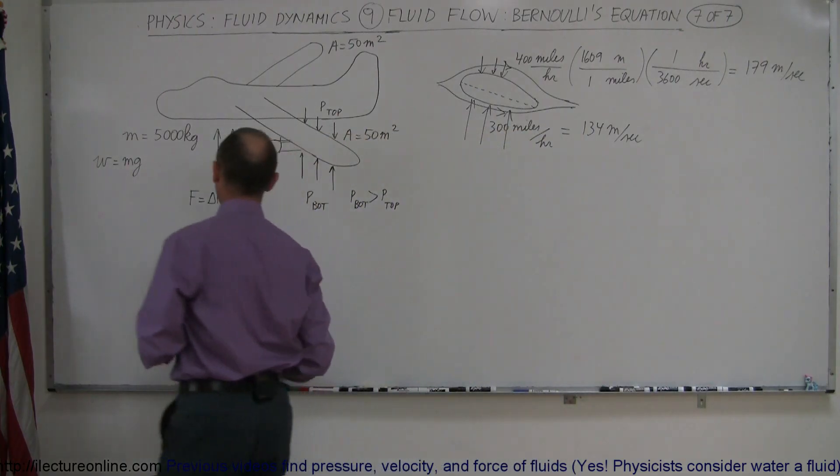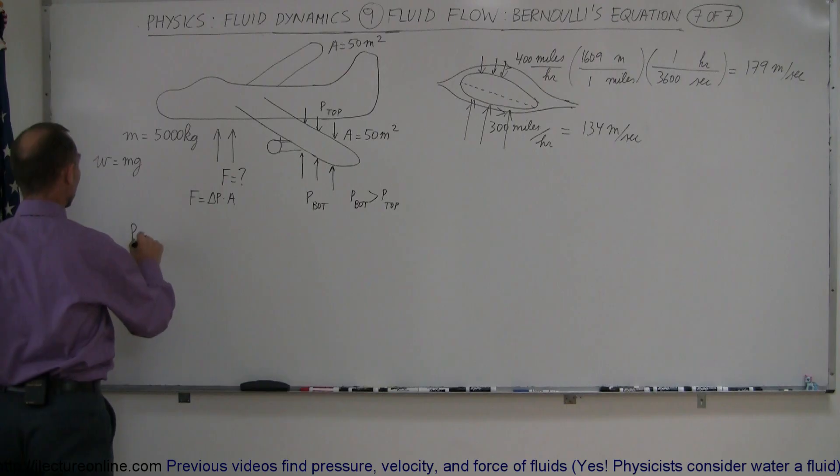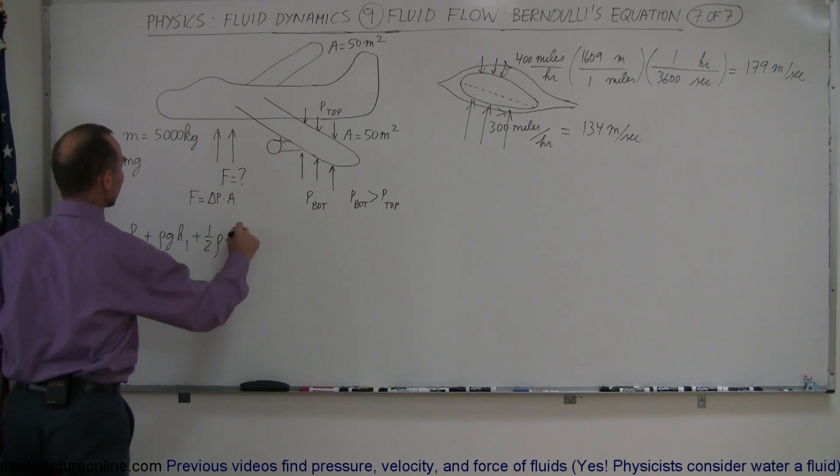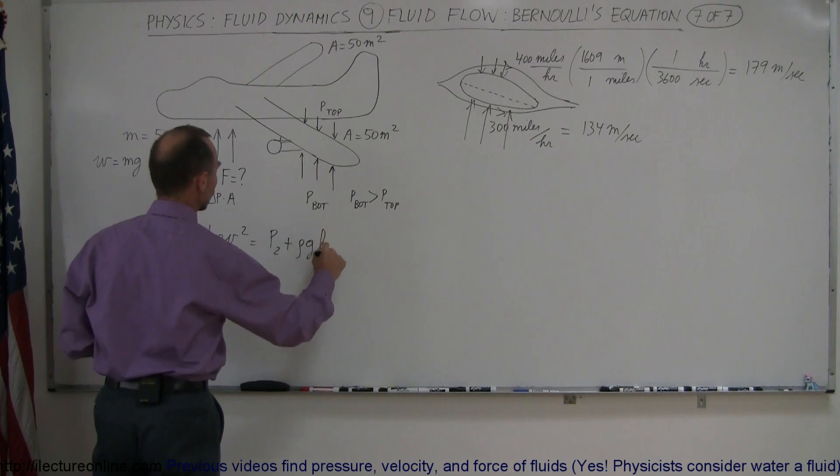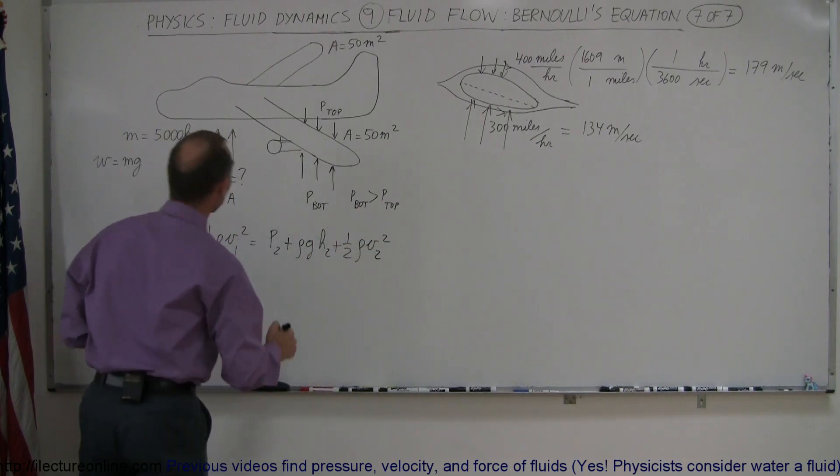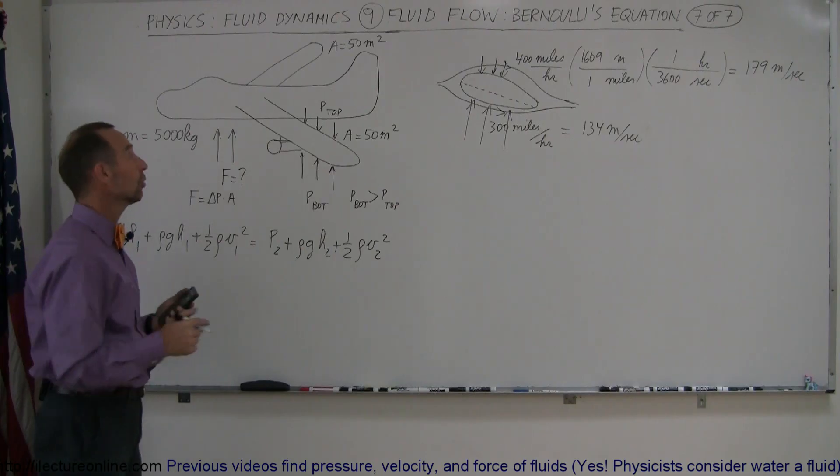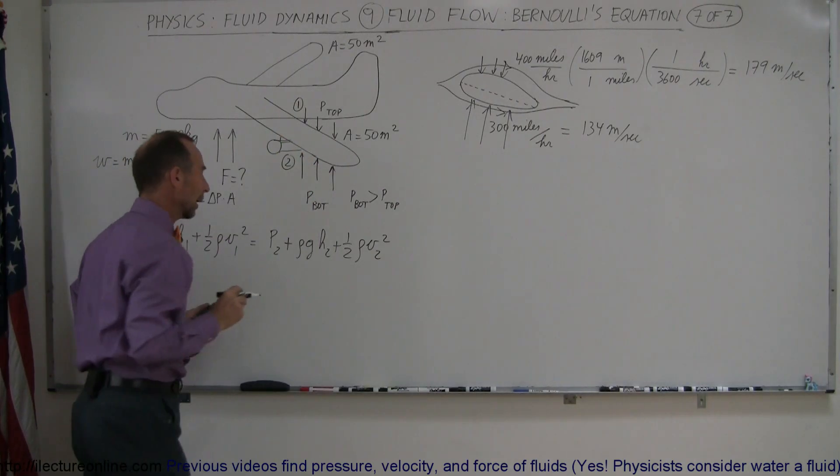Okay, so now we're going to use Bernoulli's equation. So, to do that, we write P1, pressure 1, plus rho GH1, plus 1 half rho V1 squared, is equal to pressure 2, plus rho GH2, plus 1 half rho V2 squared. And now I have to pick a 1 and a 2, let's call 1 above the wing, let's call 2 below the wing.